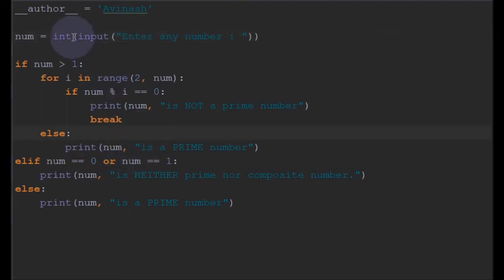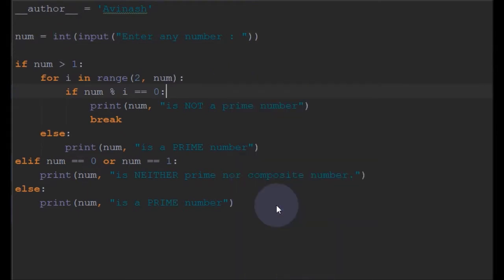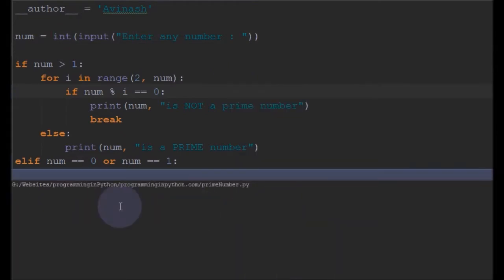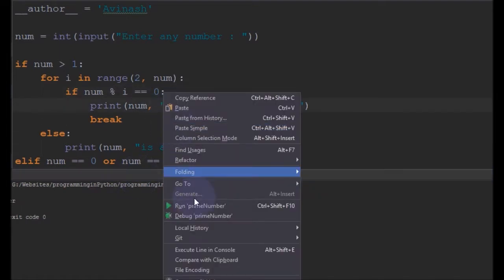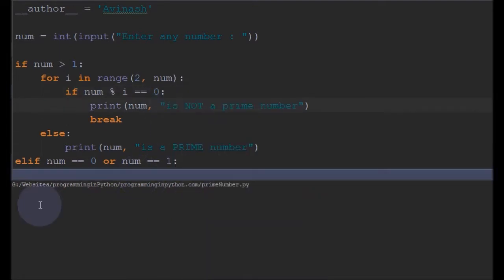We'll cast this into int and now we'll run this program and check the output. Enter any number - we'll enter 25. That's not a prime number because it's divisible by 5. We'll enter something like 29,